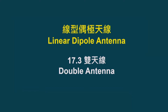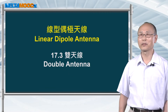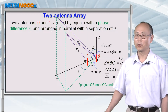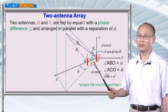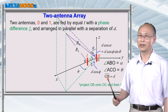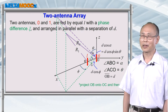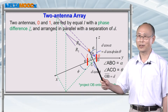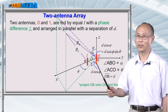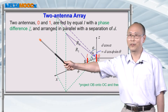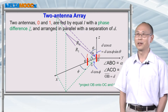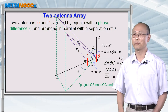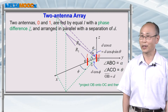Previously, we always dealt with one single antenna. Now we're going to add one more antenna into the system and see what happens. Looking at this diagram, you're going to see antenna 0 and antenna 1 installed in this XYZ coordinate system. To simplify it, assume that we drive these two antennas with the same current, but there could be a phase difference between these two antenna currents. We want to understand the far field radiation pattern of this two-antenna array.